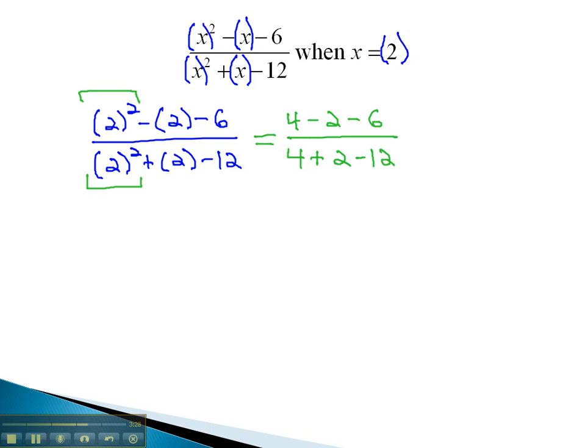In this case, there was no multiplying or dividing to do, so we can go straight to the subtraction. 4 minus 2 minus 6 is negative 4. In the denominator, 4 plus 2 minus 12 is negative 6.